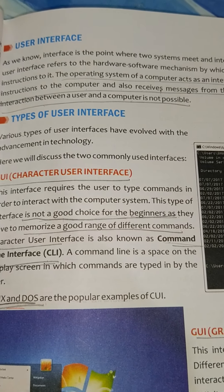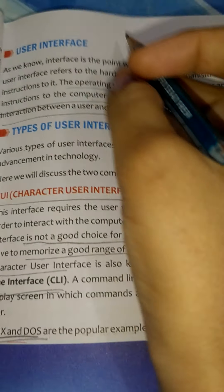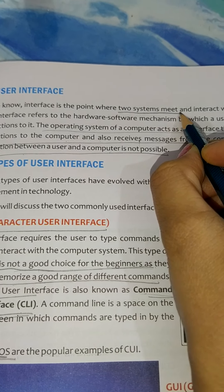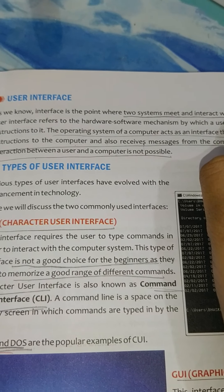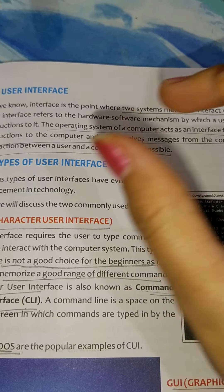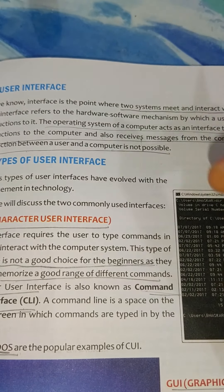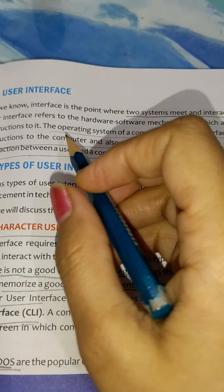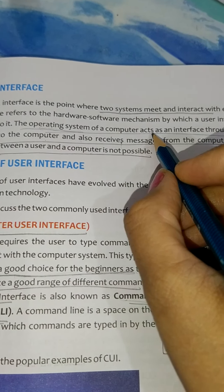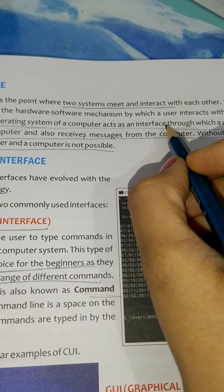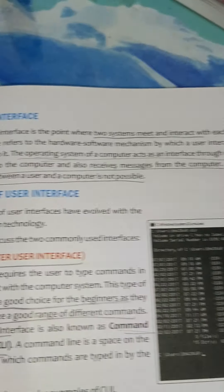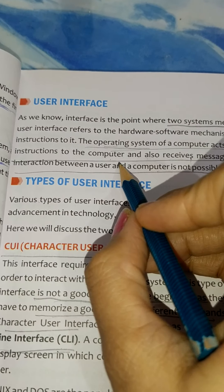What is interface? Interface is the point where two systems meet and interact. Now, to interact with a computer, we need one interface in between, and that interface is the operating system. The operating system of a computer acts as an interface through which a user gives commands or instructions to the computer.